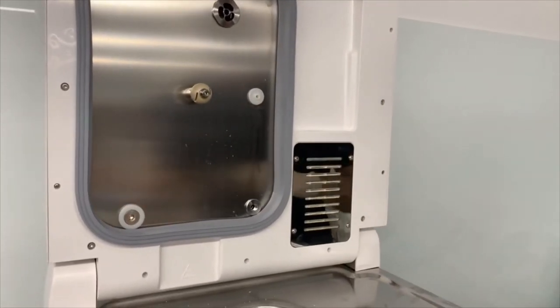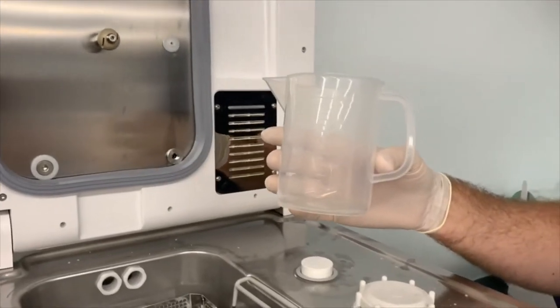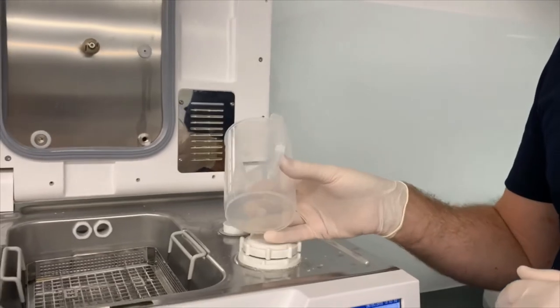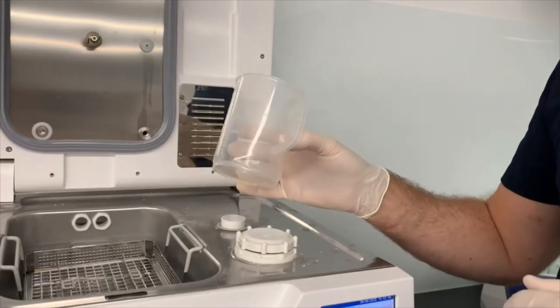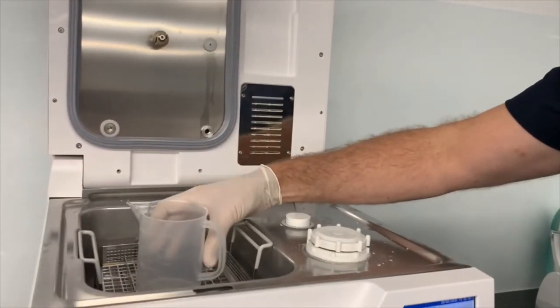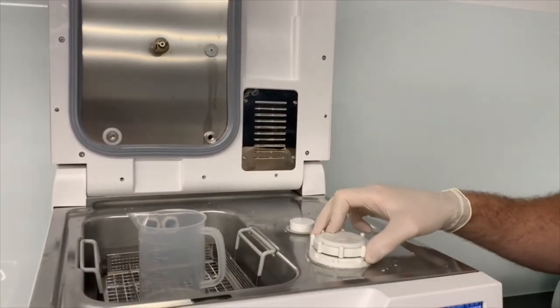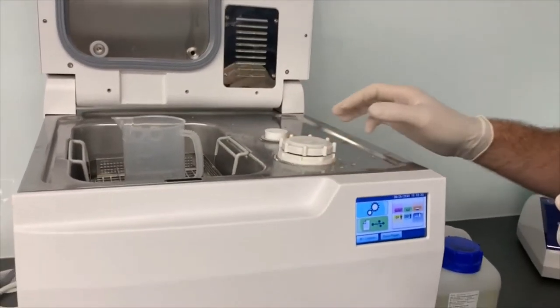Now if you can have ready the beaker or the catch cup that you normally use to fill the chemical up, it came with the machine. And we'll just run through that process of how to drain that chemical out of here and replace it with warm water to give it a nice flush through.